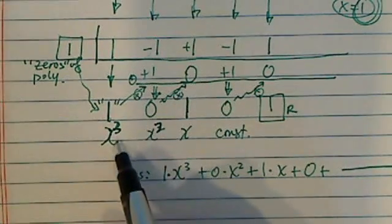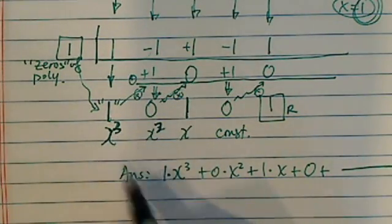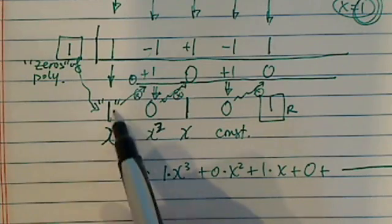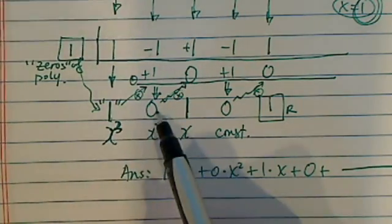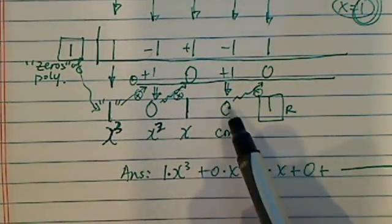So over here all I did is I put the power. It was 1 less than when we started. The answer is coefficient of 1 times this 1. And 0 times this, 1 times that, so on and so forth.